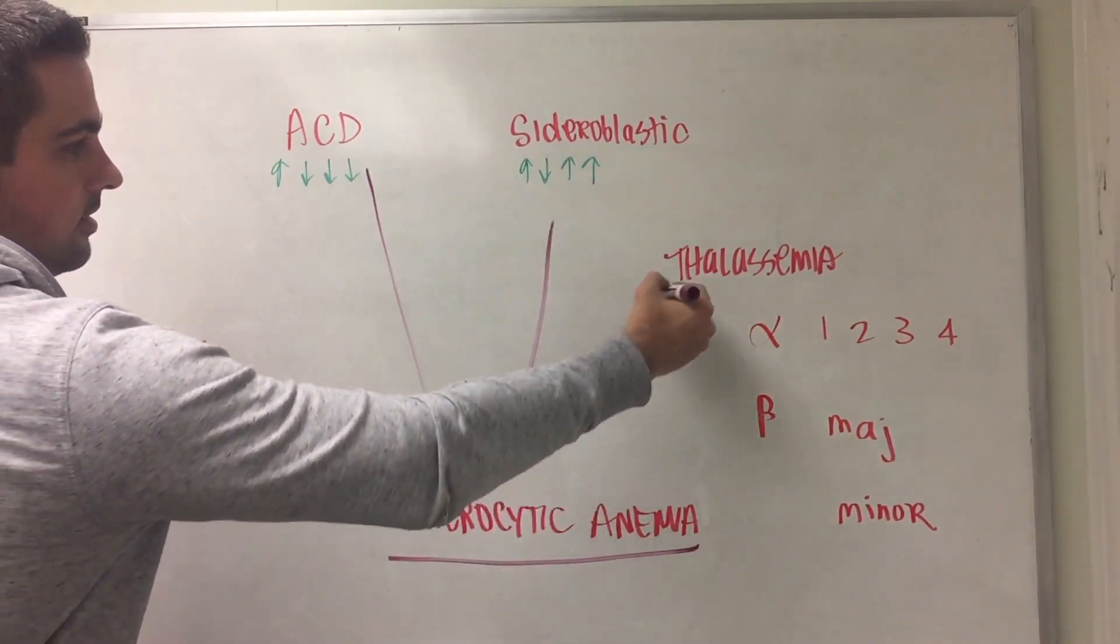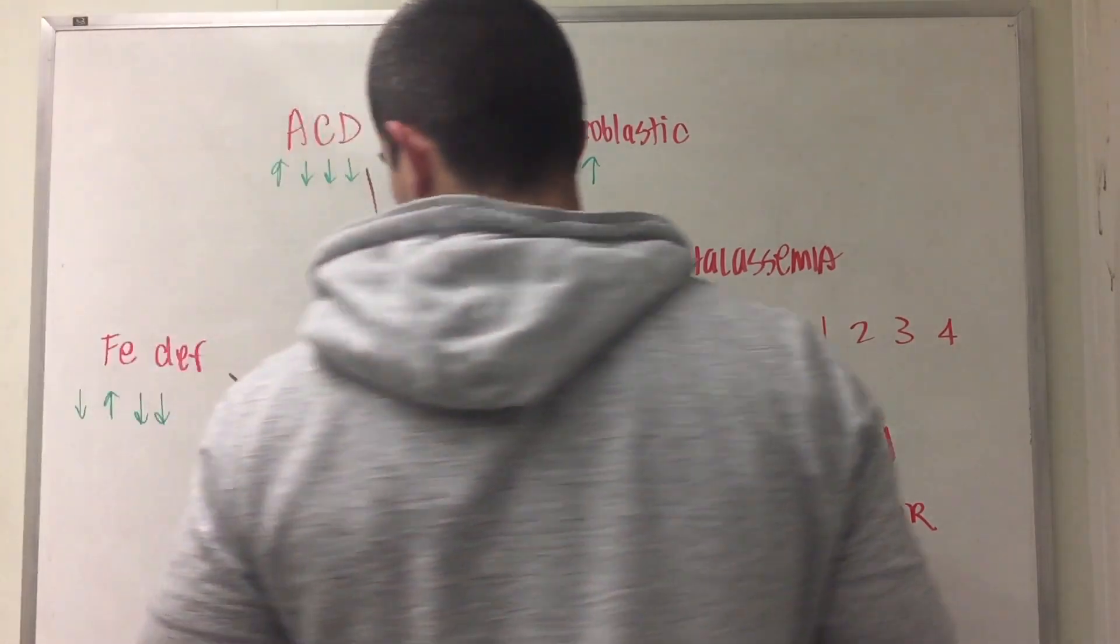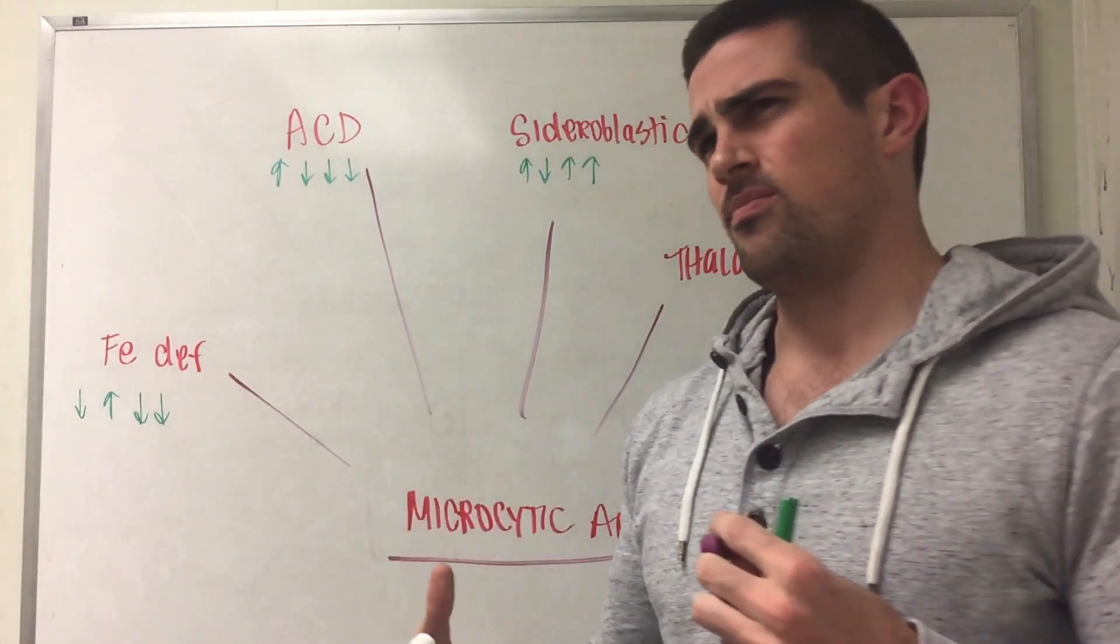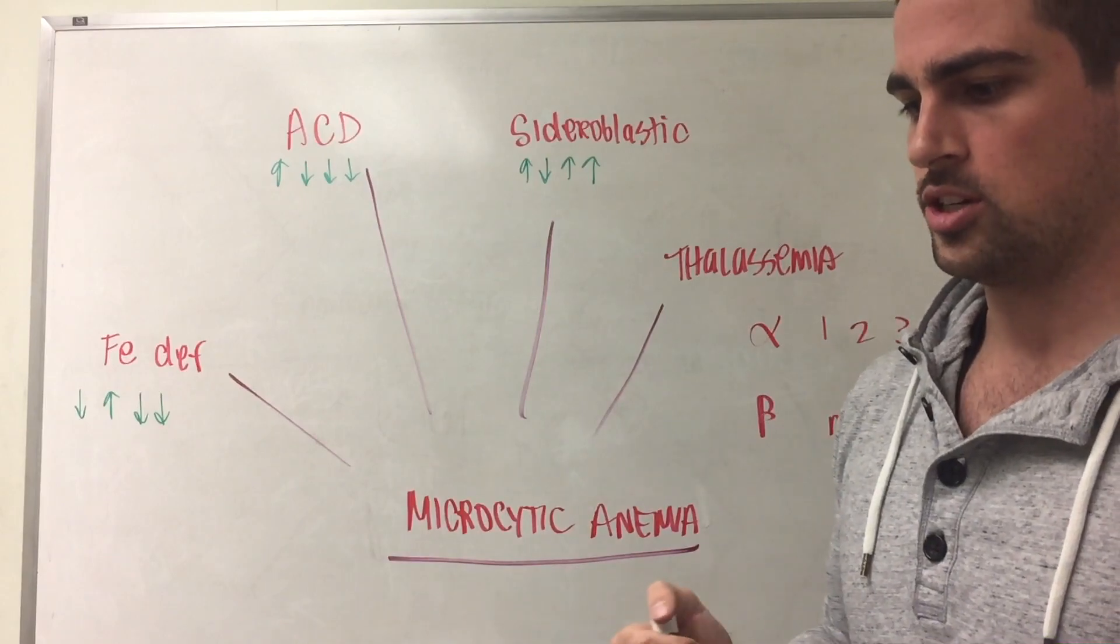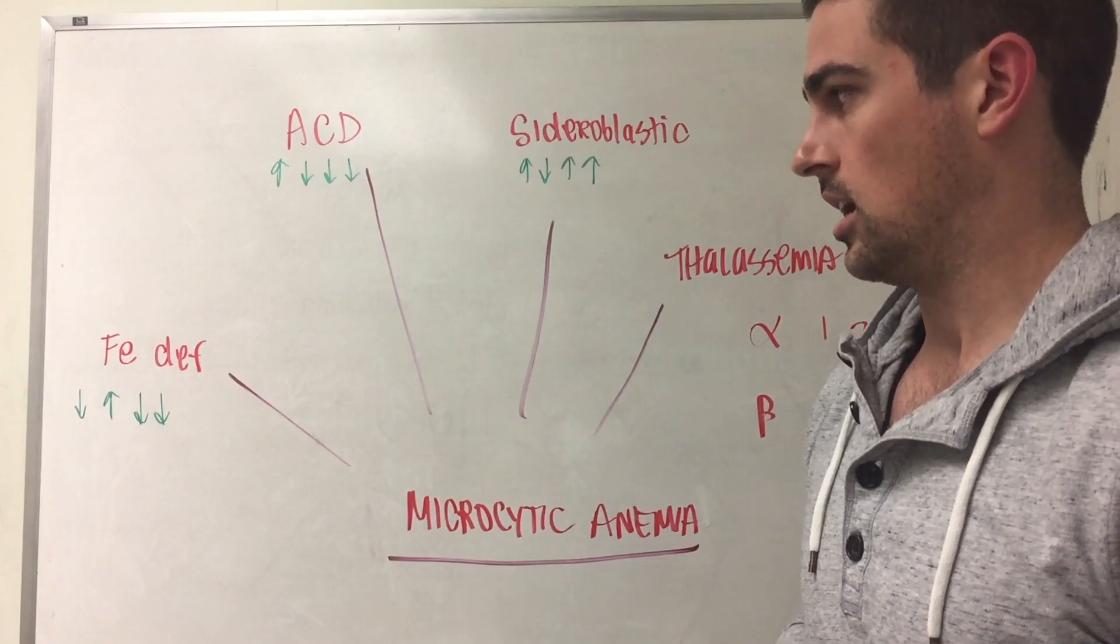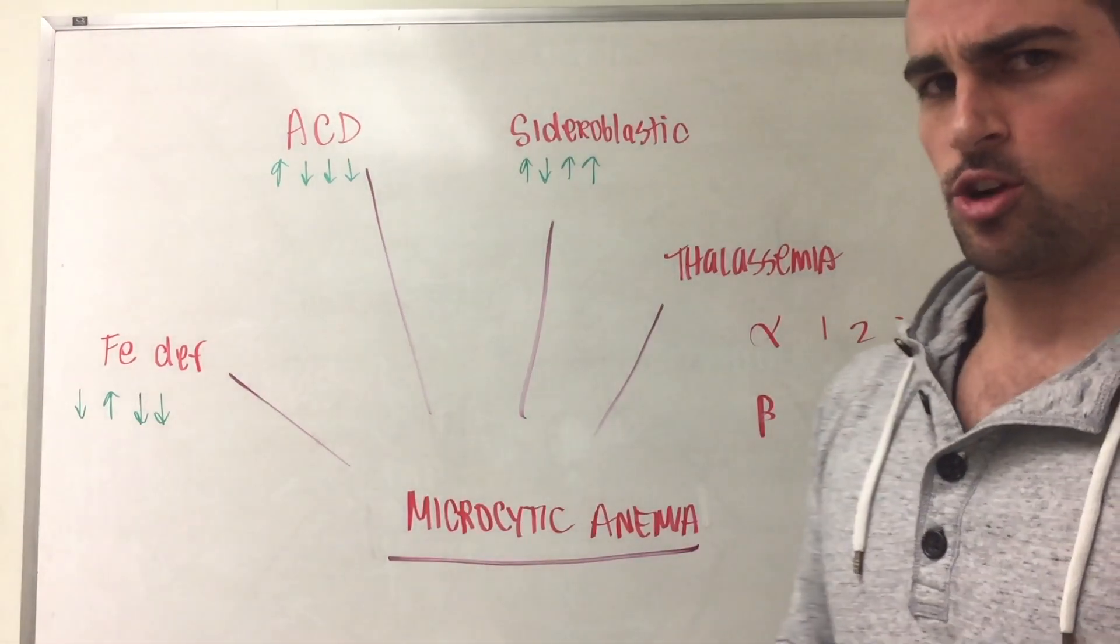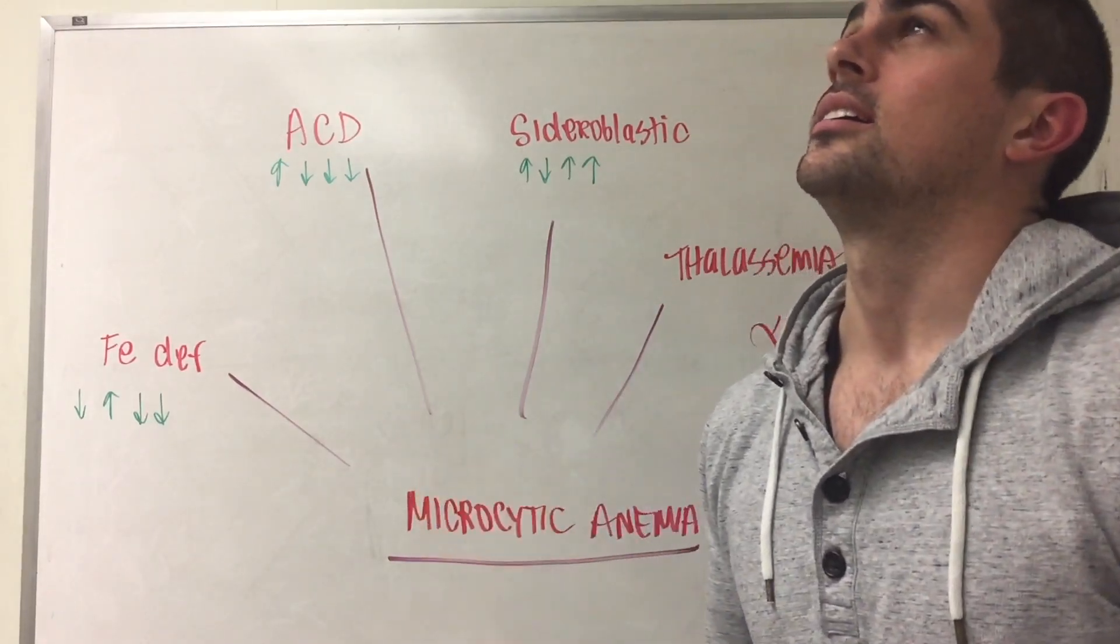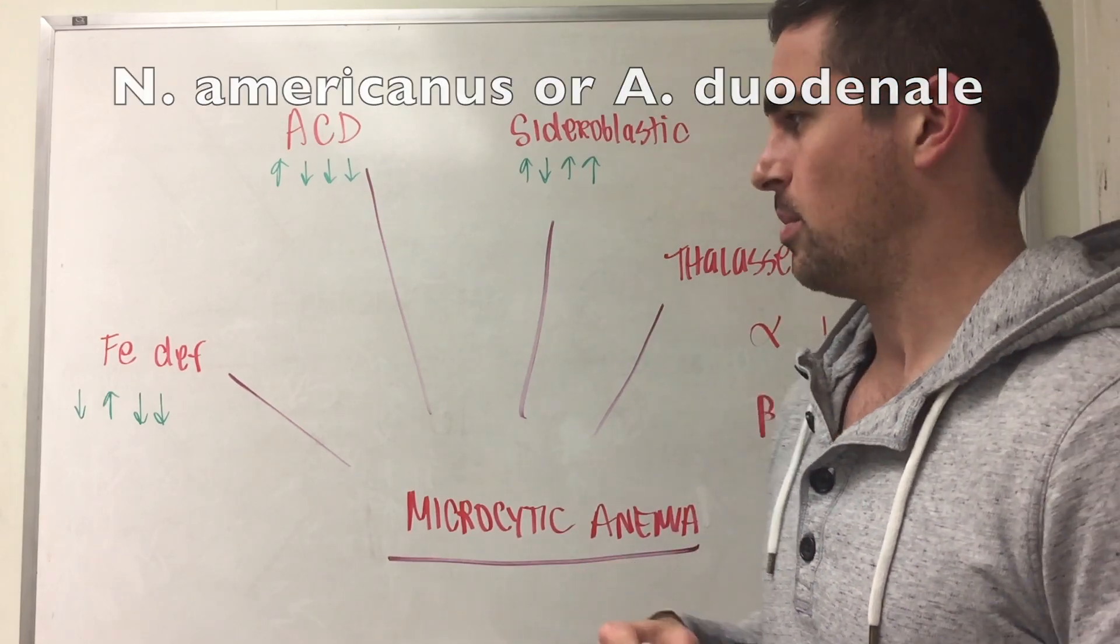Iron deficiency is one of the most common ones and is normally seen through diet in children. If the stem says the patient is an adult, then you're going to think potentially gastric bleeding. If it's third world countries, it's potentially a worm like Necator americanus or Ancylostoma duodenale.